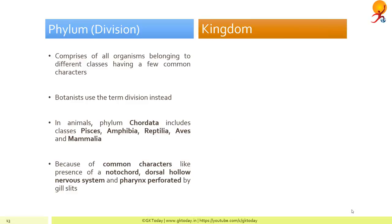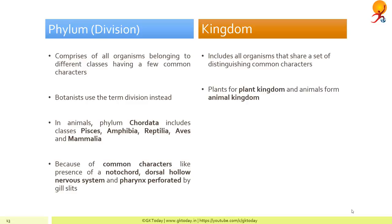Kingdom includes all organisms that share a set of distinguishing common characteristics. For example, plants all photosynthesize, so all organisms that photosynthesize form the plant kingdom, whereas the rest form the animal kingdom. The two divisions are the plant kingdom and the animal kingdom. This is the highest category of classification.